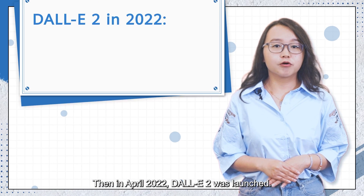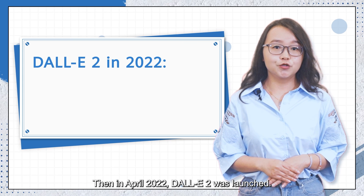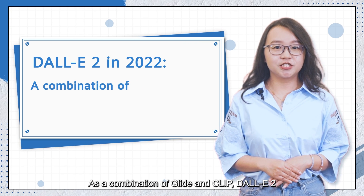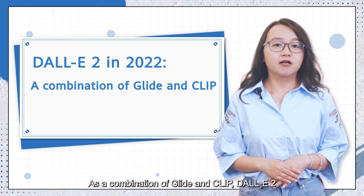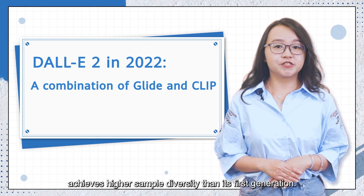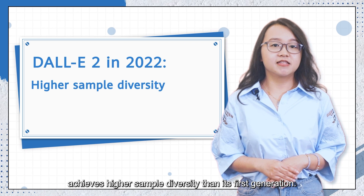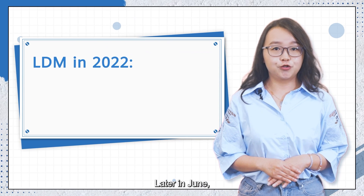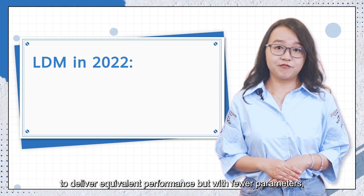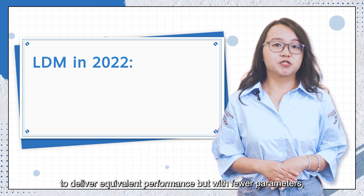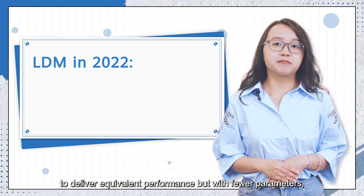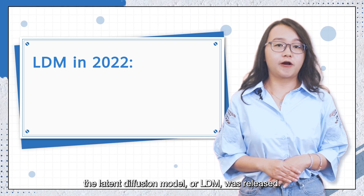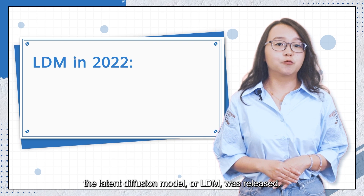Then, in April 2022, DALL-E 2 was launched. As a combination of GLIDE and CLIP, DALL-E 2 achieves higher sample diversity than its first generation. Later in June, to deliver equivalent performance but with fewer parameters, the Latent Diffusion Model, or LDM, was released.